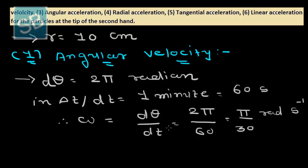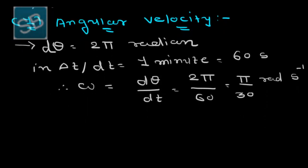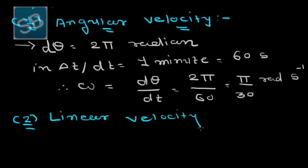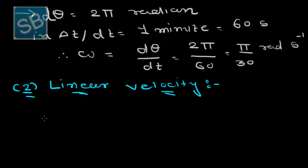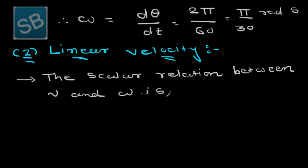Don't forget to write the unit — it is very important. The second quantity we have to find is the linear velocity. We know the scalar relation between linear velocity and angular velocity: v equals rω.